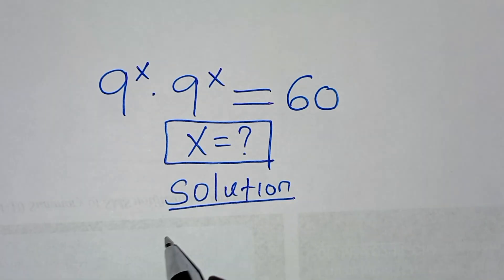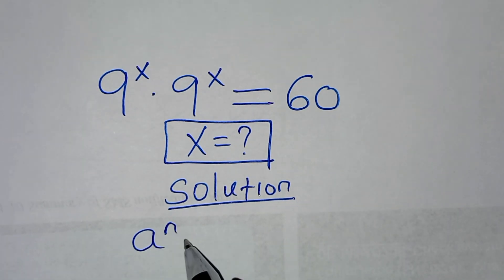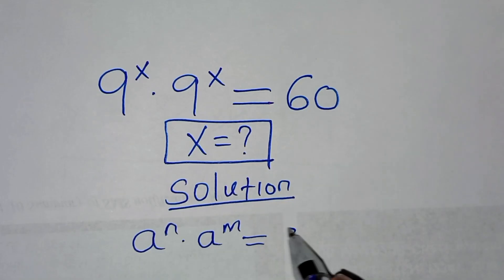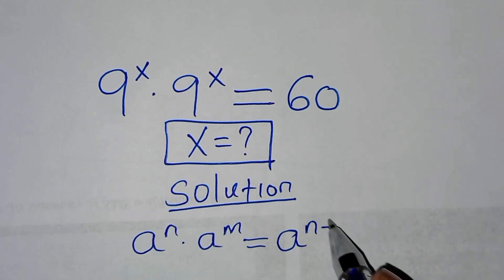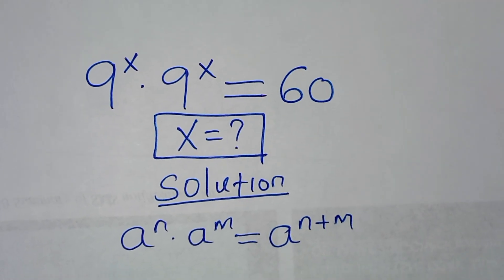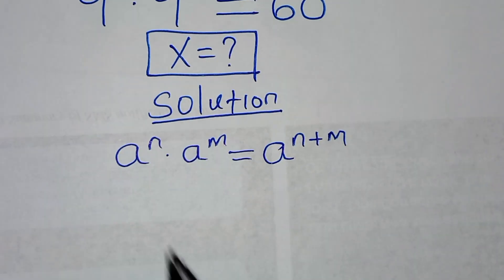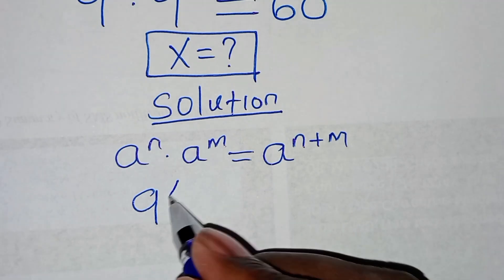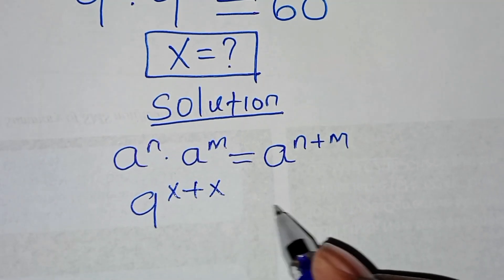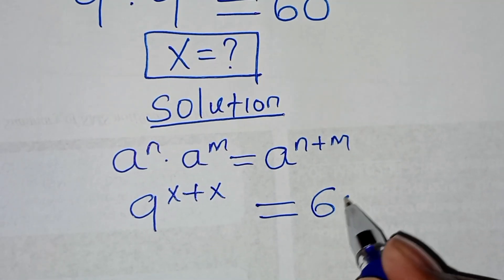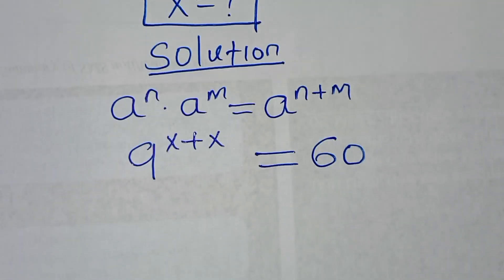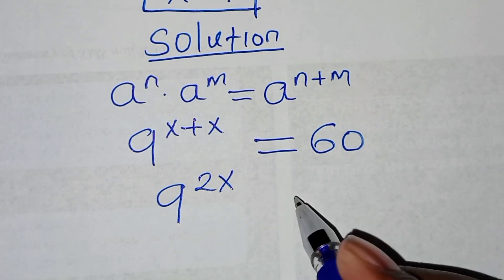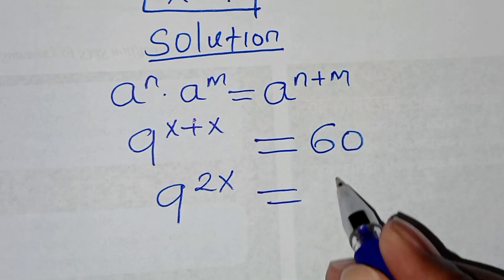This exponential equation is in the form of a to the power n times a to the power m, which we can express as a to the power n plus m. Now, applying this exponent property, we have 9 to the power x plus x, which is 2x, and this is equal to 60.